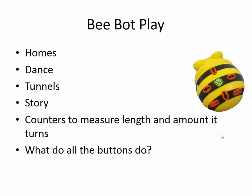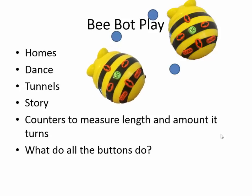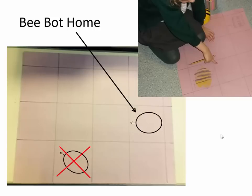We also had slightly more semi-formal activities where we gave them little tasks - could you get Bee-Bot to go up to the wall and get as close as possible, then come back? Or can you use these counters to work out how far Bee-Bot goes? Or let's use the counters to work out how much Bee-Bot turns each time - do they all turn the same amount? We also got the children to describe what all the different buttons did.